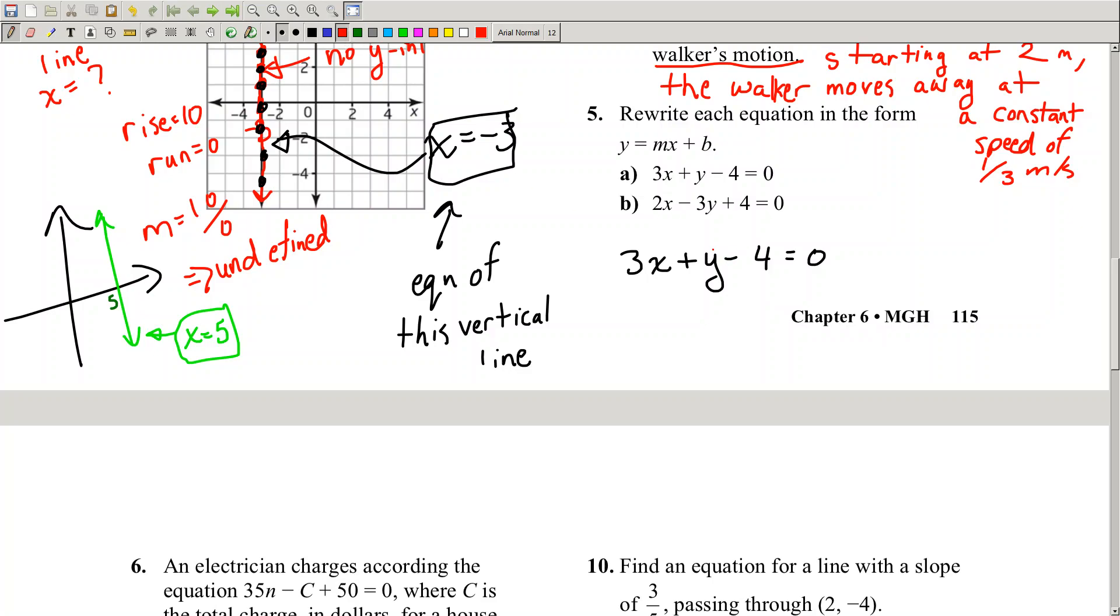Now, how do you convert from standard form to y equals mx plus b form? It's actually quite fun. What you do is you move the y term to the other side. You get a minus y because you've moved it over. The sign to the left of y changes.